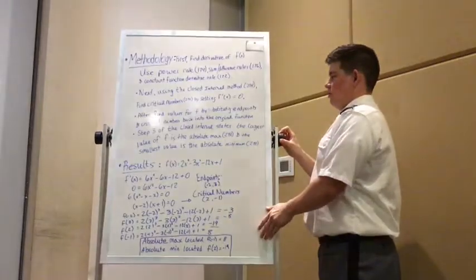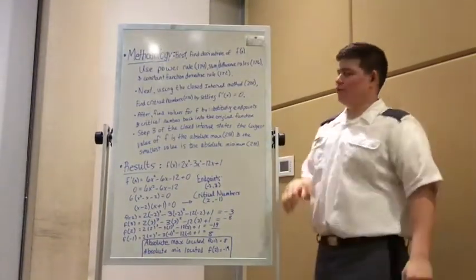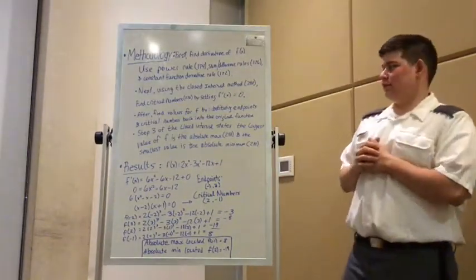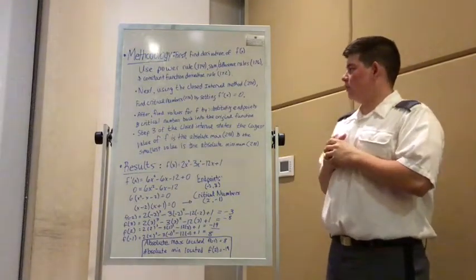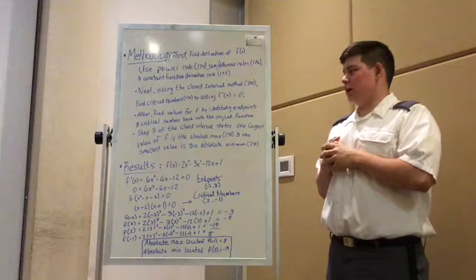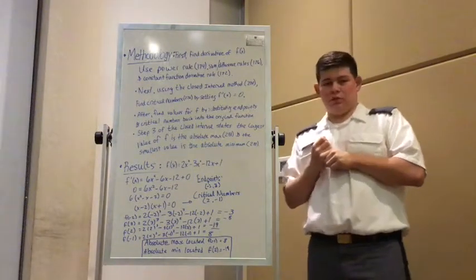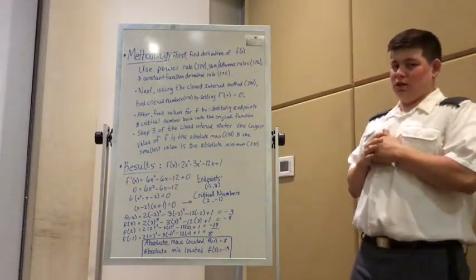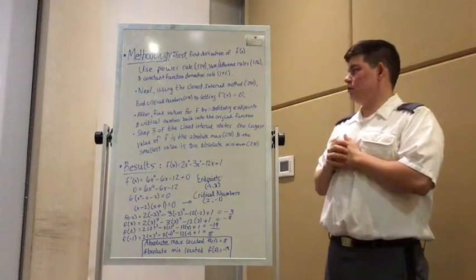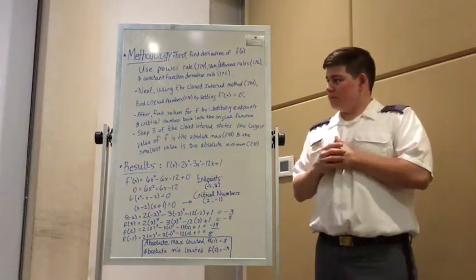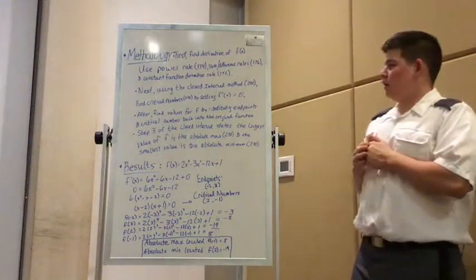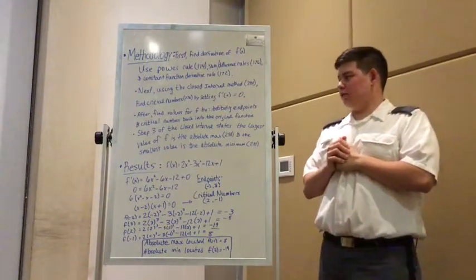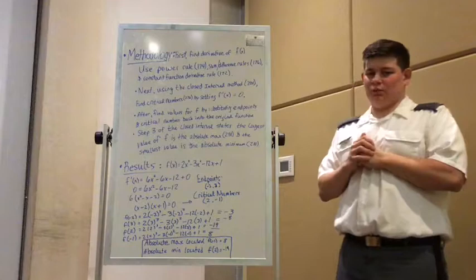Next, we have our methodology. First, we find the derivative of our function f of x. Then use the power rule, sum difference rules, and constant function derivative rules, all found in the Stuart textbook with their pages. Next, we use the closed interval method, page 281, and then we find the critical numbers by setting f prime of x equal to 0.